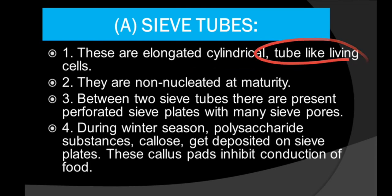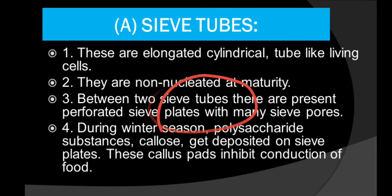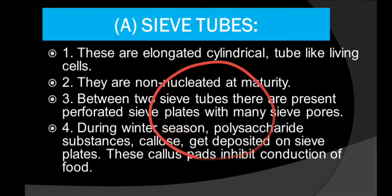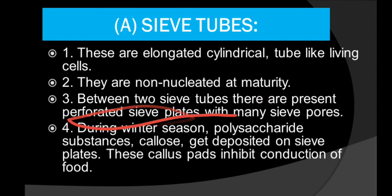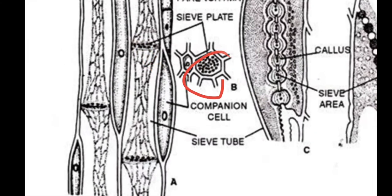Sieve tubes are elongated cylindrical tube-like living cells. They are non-nucleated at maturity — the nucleus is not present once mature. Between two sieve tubes, there are perforated sieve plates with many sieve pores. In the diagram, you can see the sieve tubes and the sieve plates at the ends, which contain many pores.